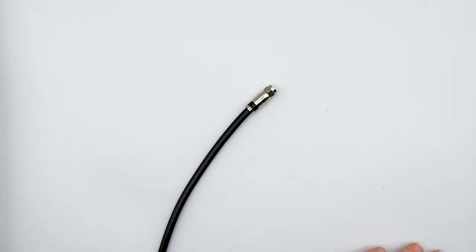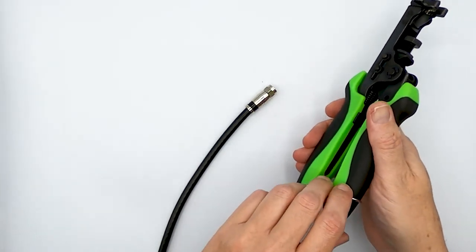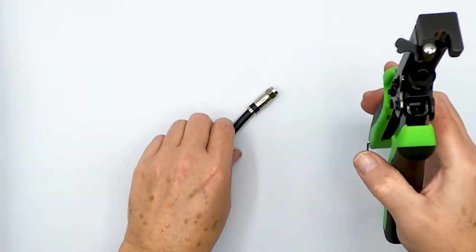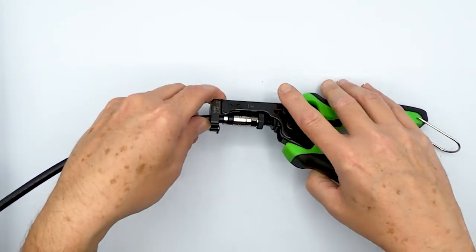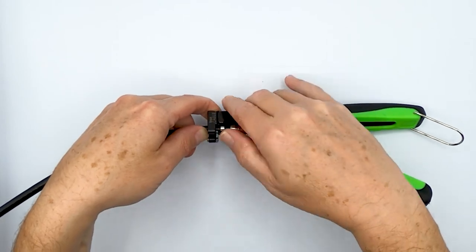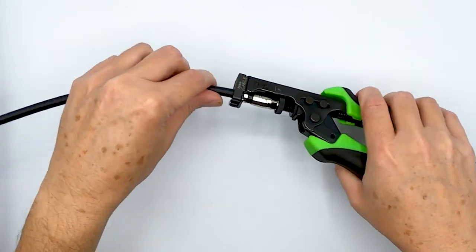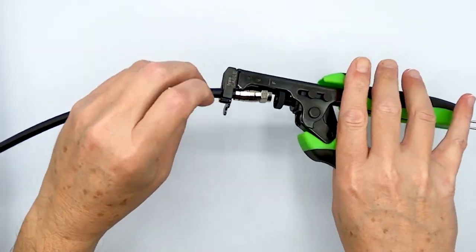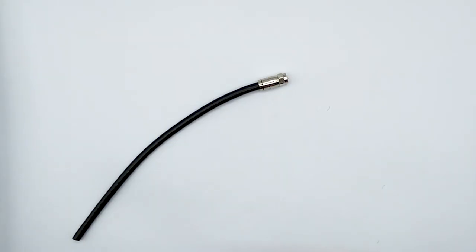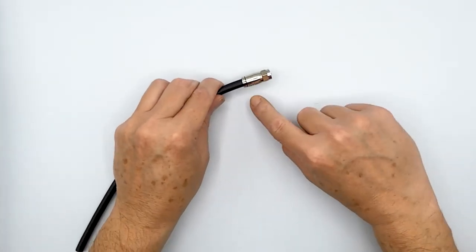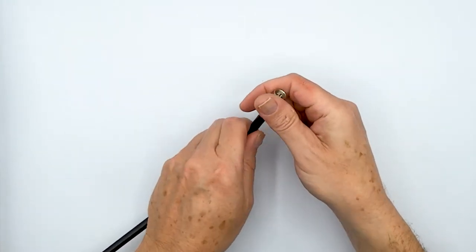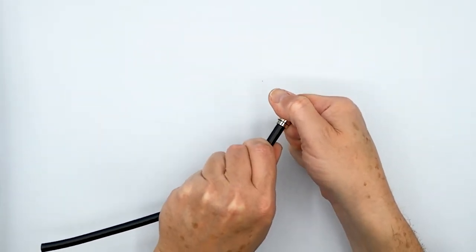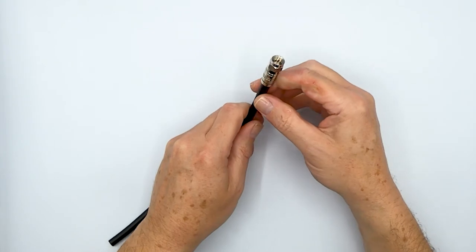So you got your compression connector on there, but what about compressing it? Well, I'm not going to talk too terribly much about it other than to say this is our new RG6 compression tool. And I'm just going to quickly demonstrate this thing compressing. Close the gate. There we go. Done. That quick. And so the connector has compressed and it's fully terminated. And believe me when I tell you that this thing is not coming off, so it's really on there good.